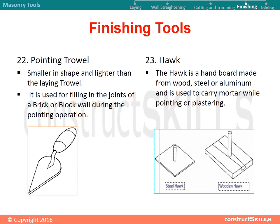Finishing tools: pointing trowel. The pointing trowel is smaller in shape and lighter than the laying trowel. It is used for filling in the joints of a brick or block wall during the pointing operation. The hawk is a hand board made from wood, steel, or aluminum, used to carry mortar while pointing or plastering.